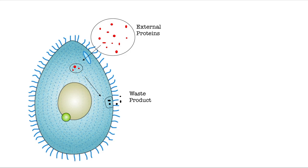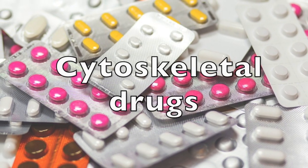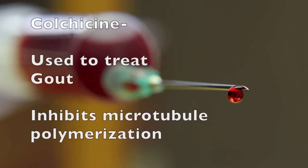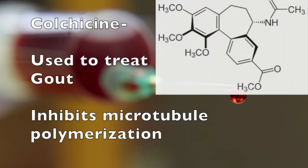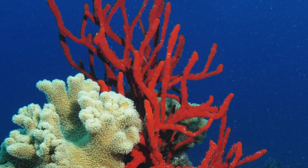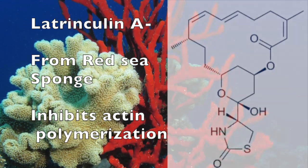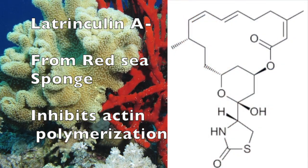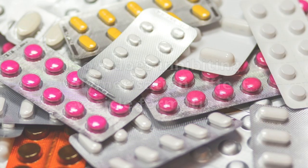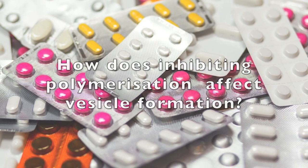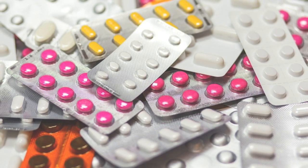There are various drugs which alter normal cytoskeleton structure. Colchicine inhibits microtubule polymerisation, whilst Latrunculin A inhibits actin polymerisation. We can use these drugs to investigate phagocytosis and exocytosis in Tetrahymena.